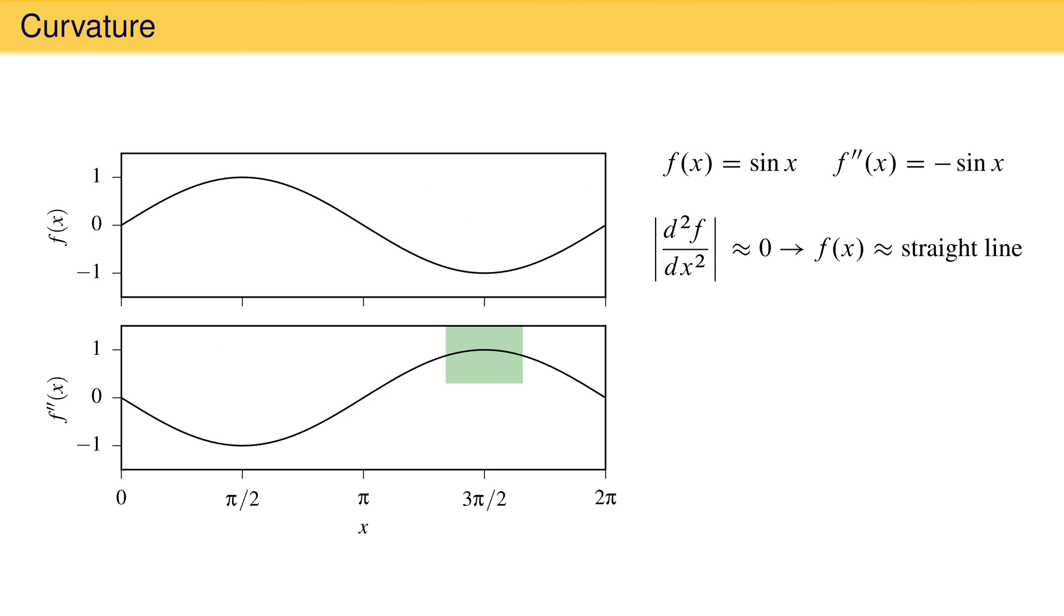If you look at the region around 3π/2, you'll see that the second derivative is large there. The corresponding region in the top panel shows that sin x is changing its shape a lot in this region. It is first going down and then going up.